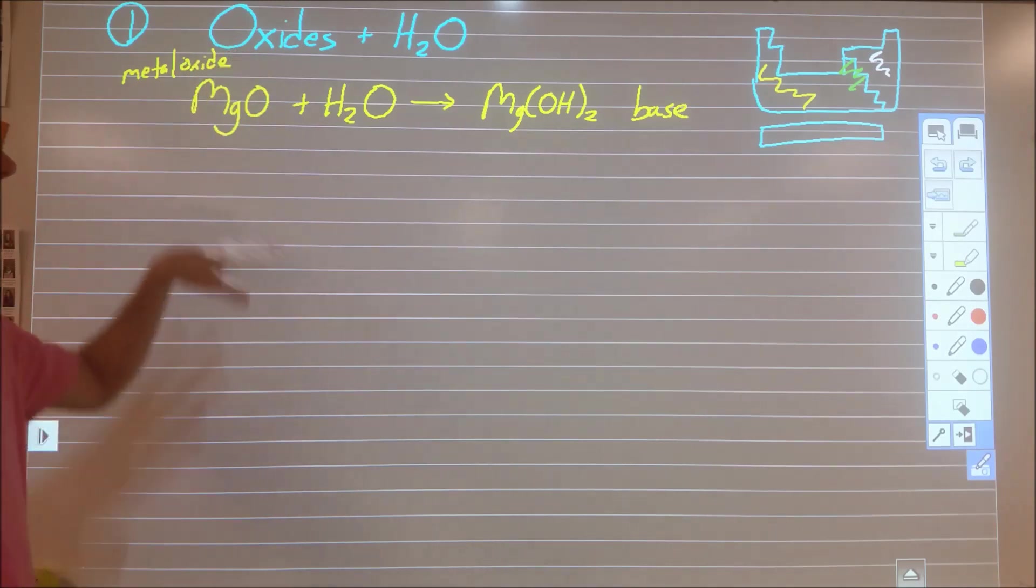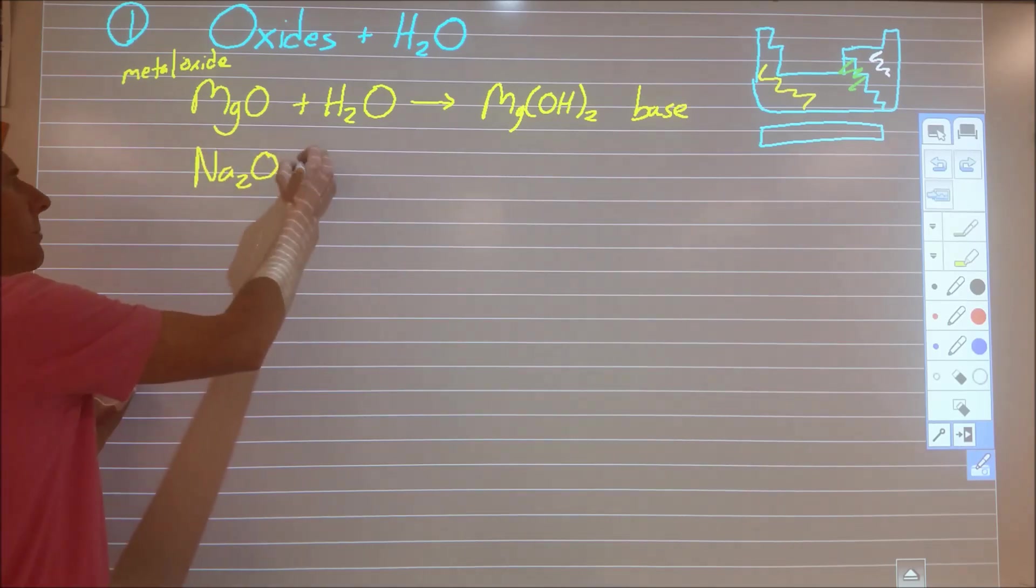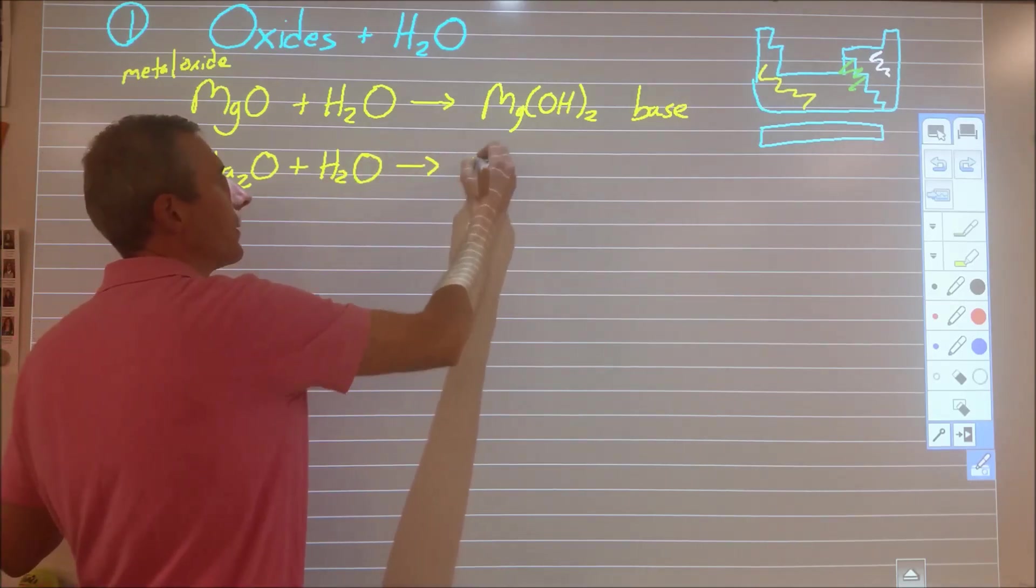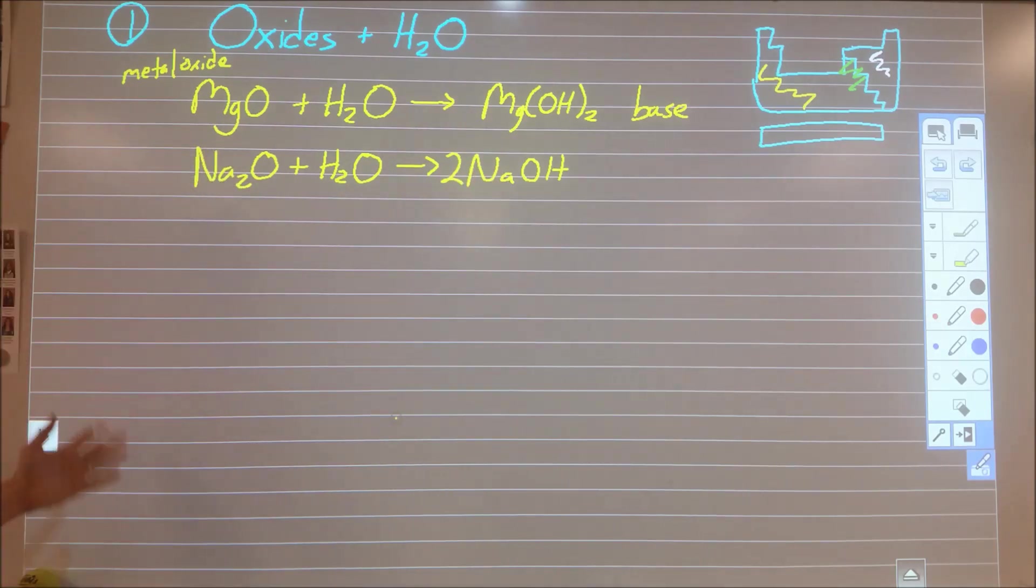So one of the things you want to know is that if you add a metal oxide to water, you'll end up producing a base. And you can do that with any metal oxide, for the most part. So sodium oxide, we end up making sodium hydroxide, and so on.